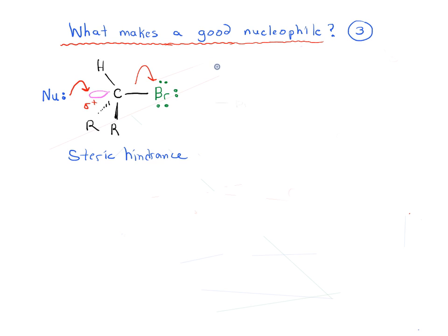If you remember what the trend was for the SN2 reaction, we said that this reaction proceeded the best, the fastest, with primary and then secondary and then tertiary alkyl halides. We said that was because of this factor, steric hindrance.